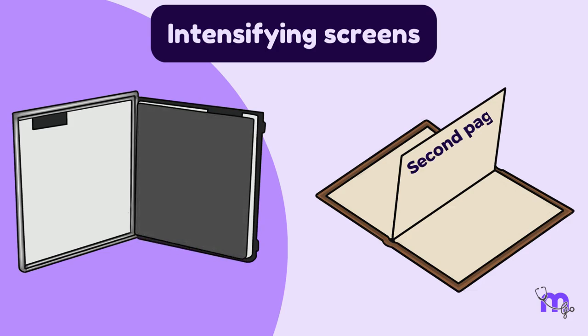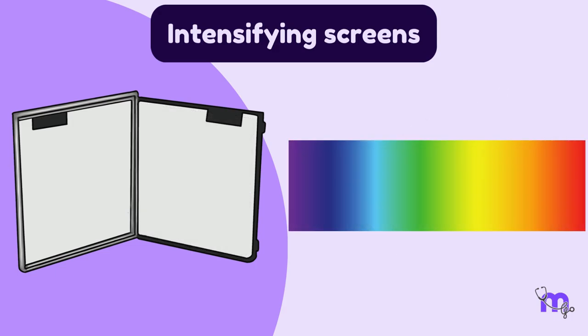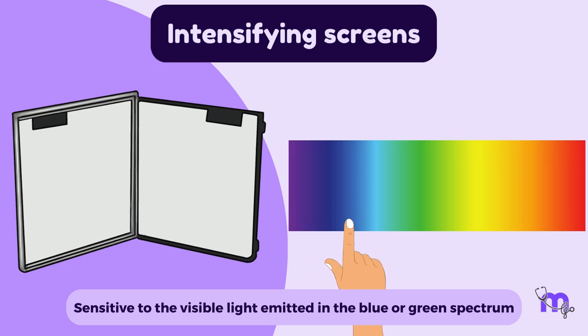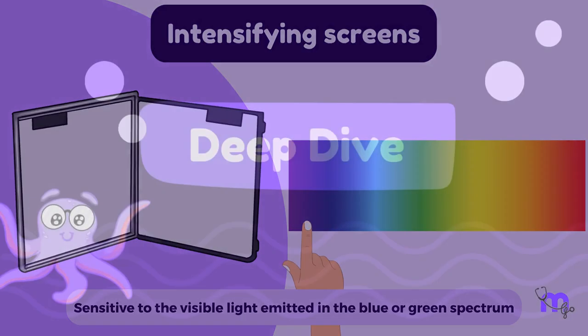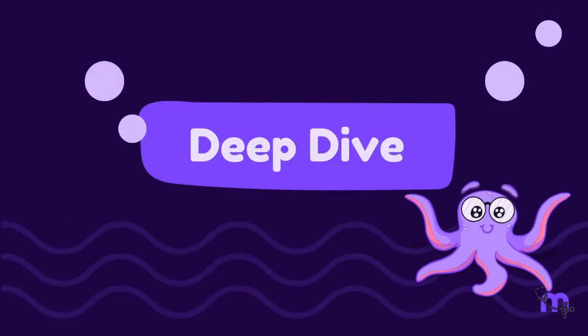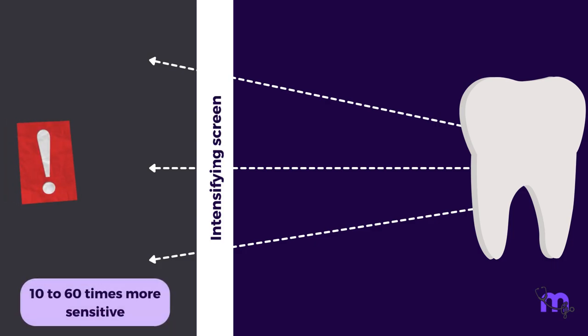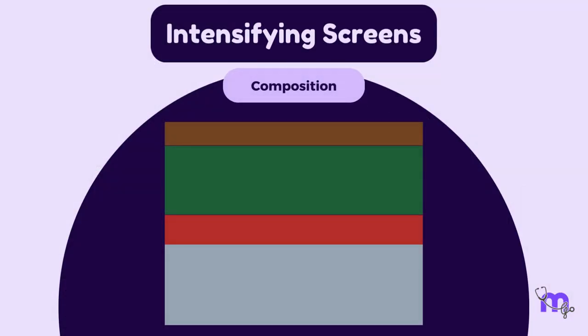The film is like the second page, positioned between these two intensifying screens. The screen films used here are sensitive to the visible light emitted in the blue or green spectrum. Intensifying screen makes the image receptor 10-60 times more sensitive to X-rays than the film alone. Consequently, the benefit is a reduced dose of X-radiation to the patient.